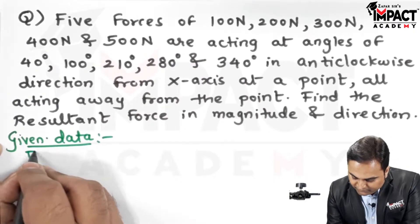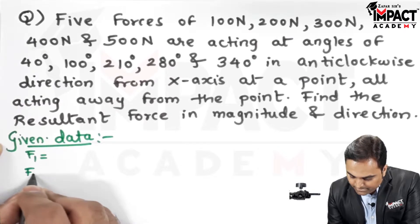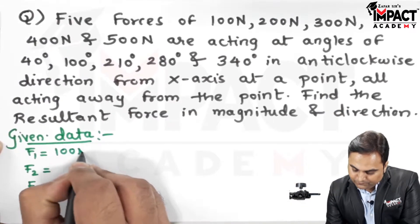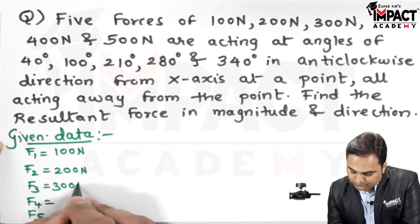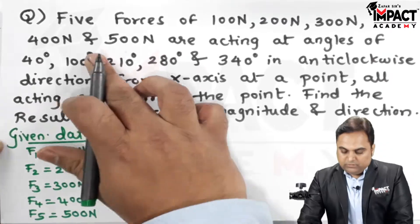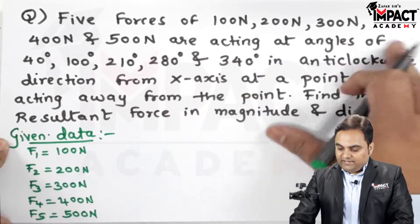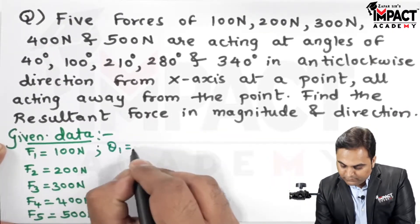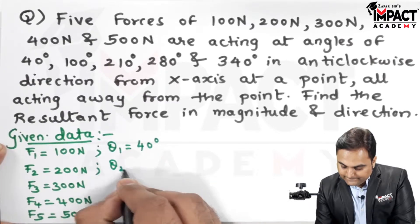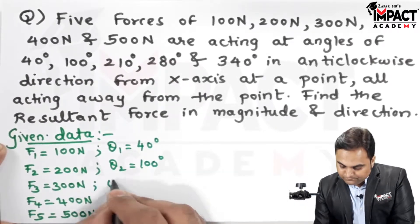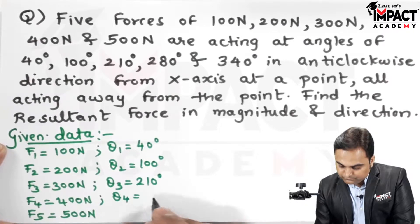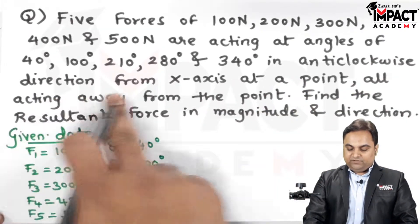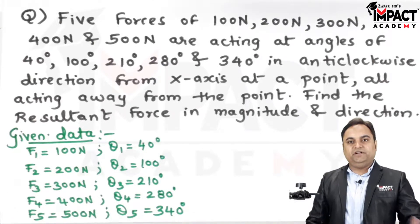Five different forces are given — F1, F2, up to F5. Five forces starting with 100 N, then 200 N, up to 500 N, are acting at angles: F1 at 40°, F2 at 100°, and so on. All angles are measured in an anti-clockwise direction from the x-axis.